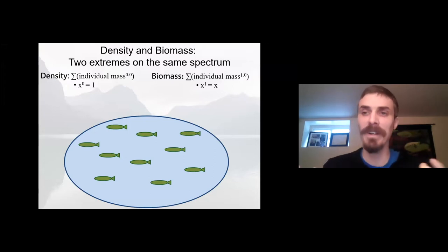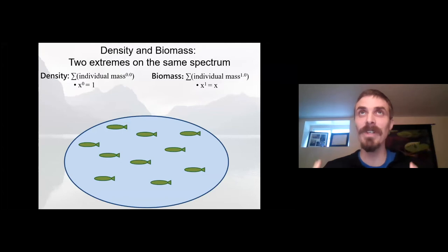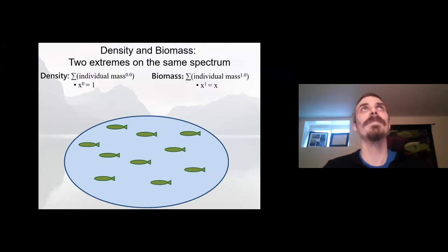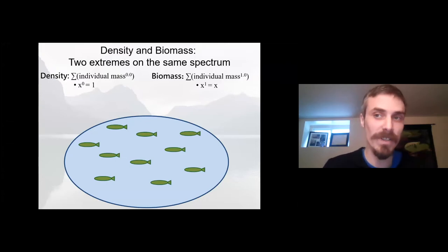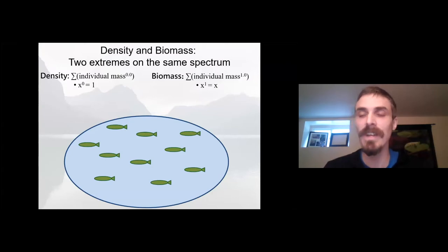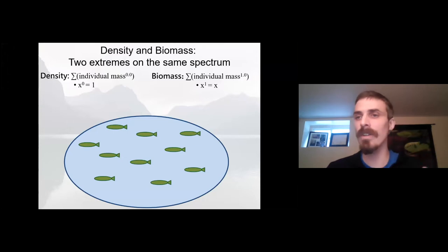How do we integrate allometry into our metrics of abundance? A key point here is that traditional metrics of abundance — typically density and biomass — are the sort of traditional fisheries metrics people are interested in. Density refers to the numerical abundance, how many individuals total there are in an environment regardless of their size. Biomass refers to the total mass of all individuals present in an environment.